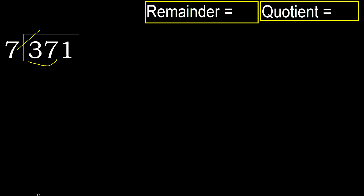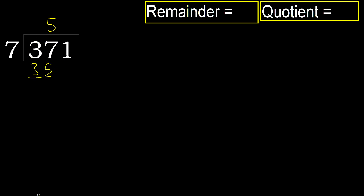7 multiplied by which number is nearest to 37 but not greater? 7 multiplied by 6 is 42, which is greater. Multiplied by 5 is 35, which is not greater. Subtract: 37 minus 35 equals 2.